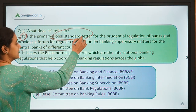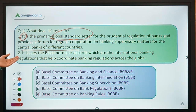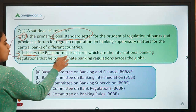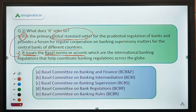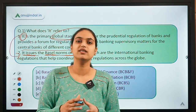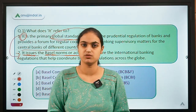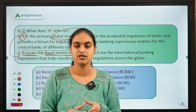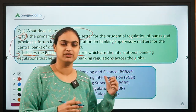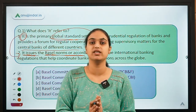We have to identify the primary global standard setter — that committee which provides standards for better regulation of banks. The second statement says it issues the Basel norms or accords, which are international banking regulations that help coordinate banking regulations across the globe. Basel is basically a place in Switzerland, and the name of this committee came from there.